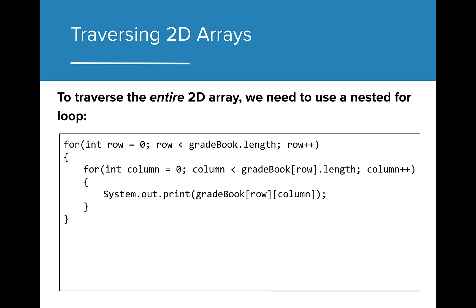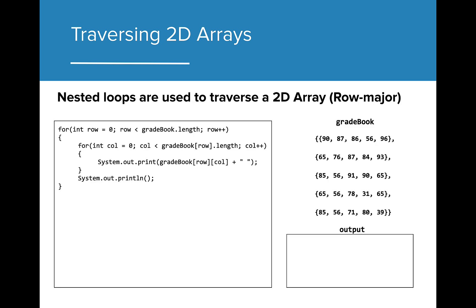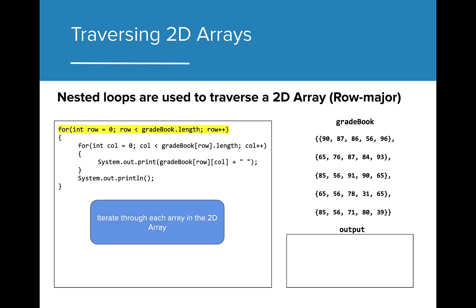The former two traversals only produced output for a specific column or row. We can also traverse the entire 2D array by using a nested loop. We can take the initial traversal that we used to access exam 1 scores and make it a nested loop so as to access all values in the 2D array. The outer for loop iterates through each array in the 2D array, while the inner for loop iterates through each value in the current array.